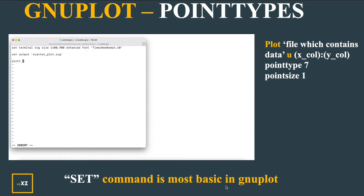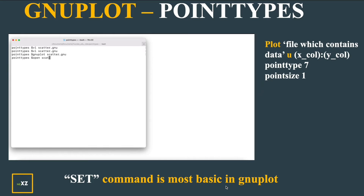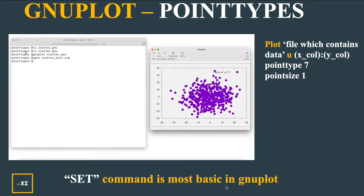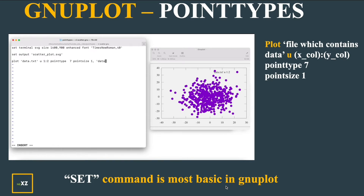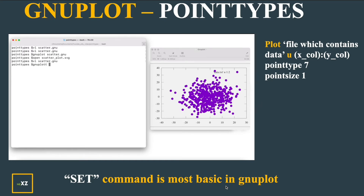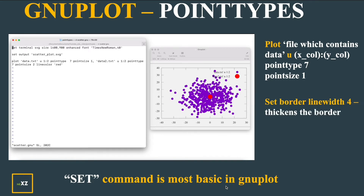Now I do the Plot command. I use Data.txt which has my Scatter Plot. I use Point Type 7, which is Circle, and Point Size 1. I run New Plot Scatter.gnu and open my SVG file using the Open command. You can see my Scatter Plot. Now I'll give Data2.txt which has only 1 point and use Point Type 7, same circle, give Point Size 2 which is larger, and give a Line Color Red.